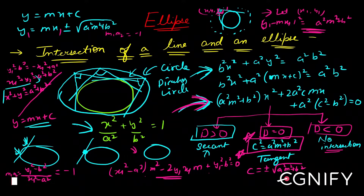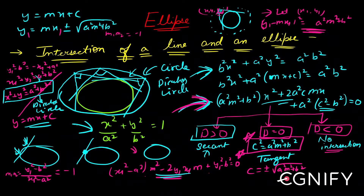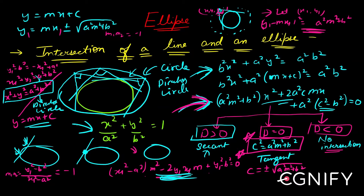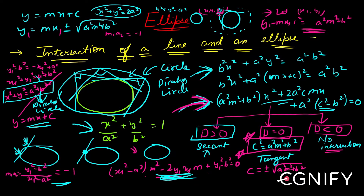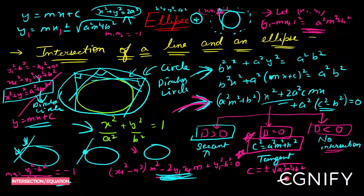Since (x₁, y₁) was assumed to be a point on the locus, replacing it with (x, y) gives the equation of the director circle: x² + y² = a² + b². The concept was simple — I formed a quadratic in m and imposed the condition that the product of roots equals -1, because the tangents must be perpendicular. Compare this with the director circle of a circle x² + y² = a², whose director circle was x² + y² = 2a².